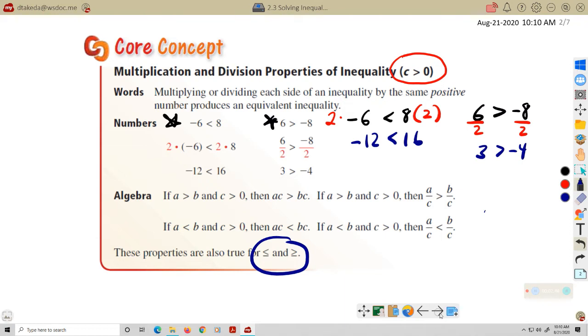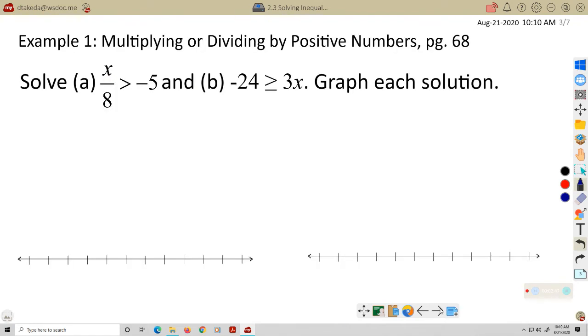Let's take a look at a few examples here. For example A, X divided by 8 is greater than negative 5. I'm going to multiply both sides by a positive 8. And I get left with X is greater than negative 40.